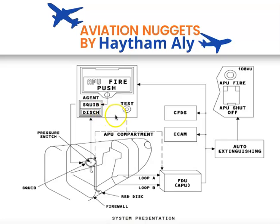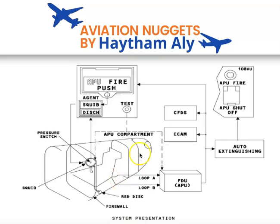The APU has three types of shutdown: normal shutdown, automatic shutdown, and emergency shutdown. The normal shutdown happens from the master switch. If the APU is operating on electrical power only, it shuts down immediately. However, if the APU is operating and you are taking bleed air from it, the APU will shut down after a cool-down cycle.